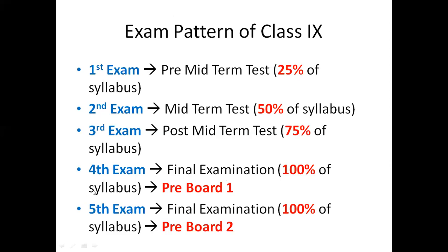You were happy that your fourth exam was not conducted in 9th standard. But this year in 10th standard, you'll be having five exams. In each exam, 25% extra syllabus will be added. In the first exam, 25% syllabus will be there. In the second exam, it will be 50% — previous 25 plus new 25. For the third examination, previous 50% plus new 25%, totaling 75%. And for the fourth exam, it will be 100%.